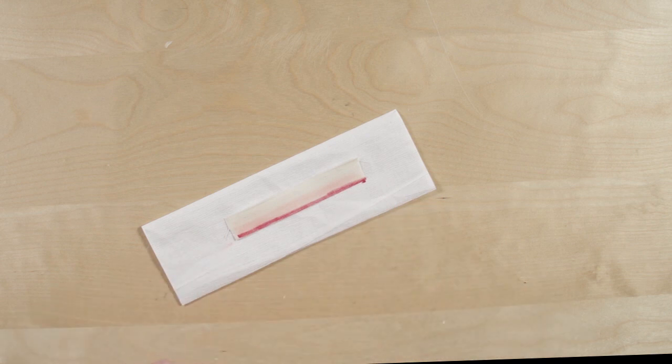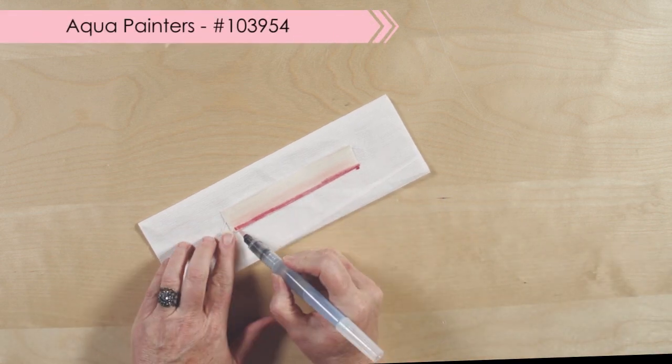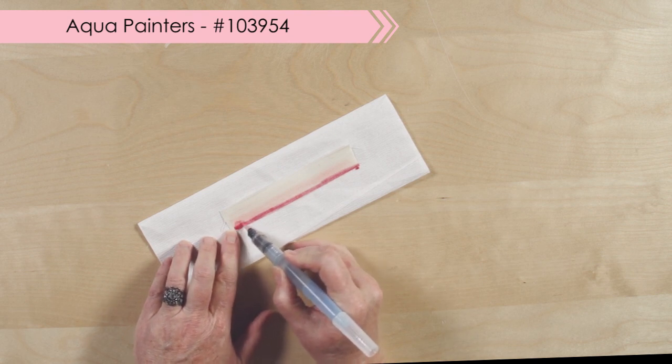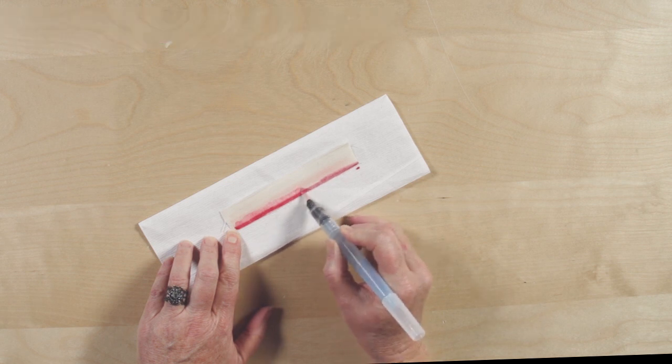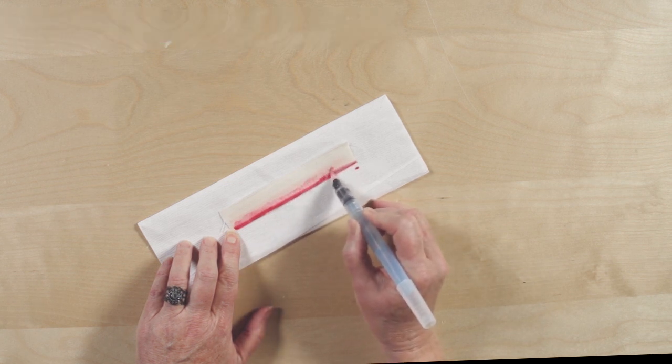Now I've put this on a paper towel because now I'm going to use one of our aqua painters to blend the color. So you'll just squeeze a little bit of water out of your aqua painter, and then just blend that line a little bit.